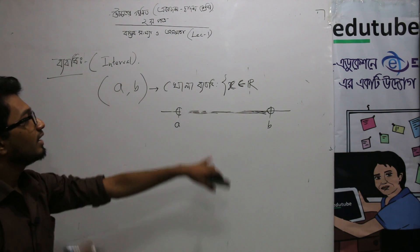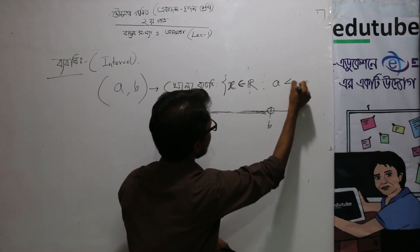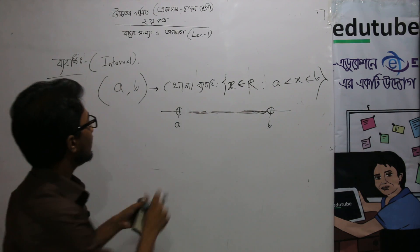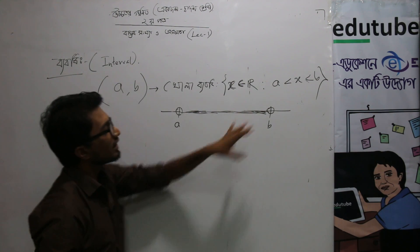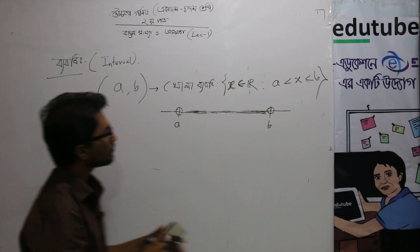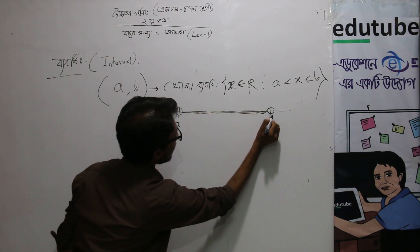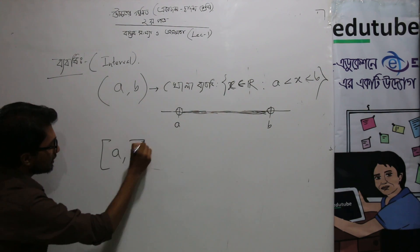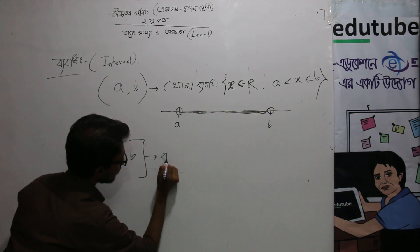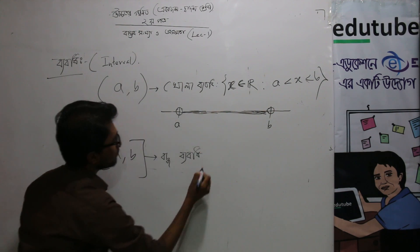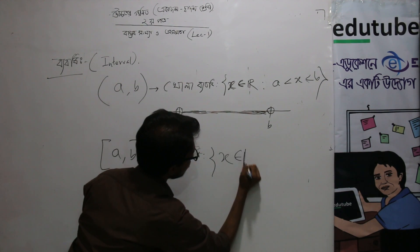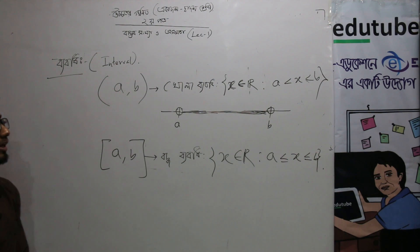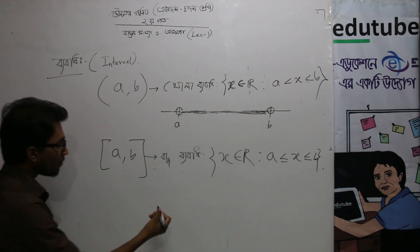x element of R such that a is less than x less than b. A less than or equals to x equals to b. That means a equals b, x equals to b.